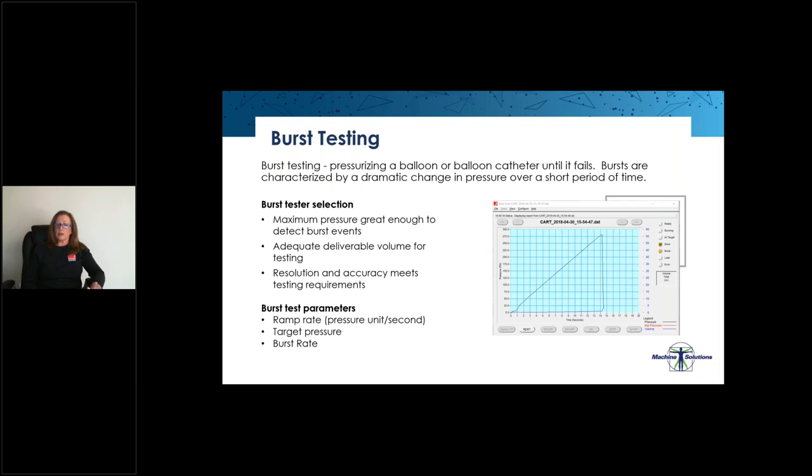Burst test parameters to consider when we're developing a burst test include our ramp rate, target pressure, and burst rate. When we're selecting our ramp rate, it's usually dependent on the type of product that we're testing, as well as maximizing our test time. For instance, if we're testing a catheter with a very small lumen, we're going to need to select a slower ramp rate due to flow restriction. If we're testing a catheter that is more compliant and larger, we can go faster with our ramp rate, but we do need to be careful not to go too fast as to lose control of the ramp. We should set our target pressure higher than the pressure that we expect our product to fail, and the burst rate should be set in order to trigger burst conditions.